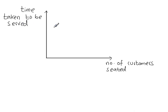So you walk into a restaurant and the number of customers who are already seated is on the x-axis. And the time it takes after you sit down for you to be served is on the y-axis.